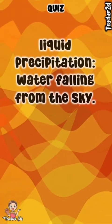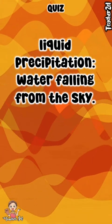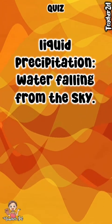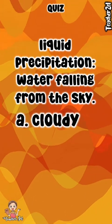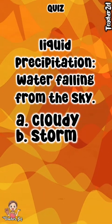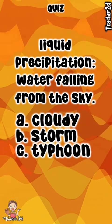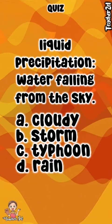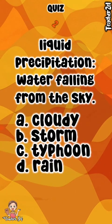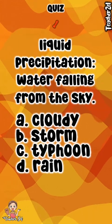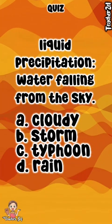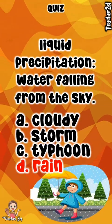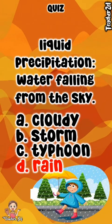Liquid precipitation — water falling from the sky. A. Cloudy. B. Storm. C. Typhoon. D. Rain. The answer is D. Rain.